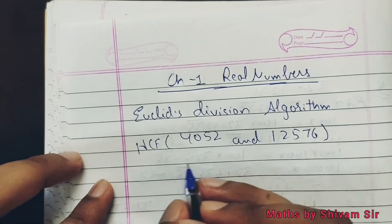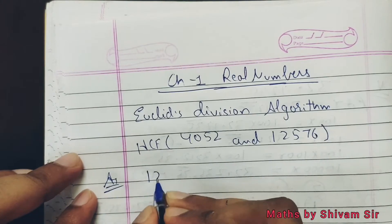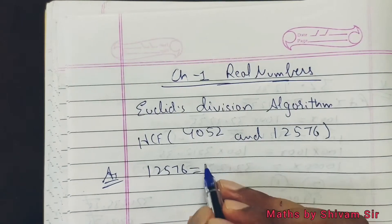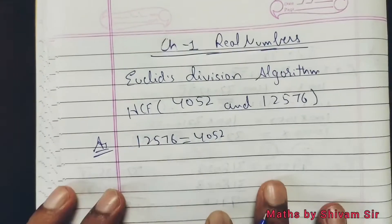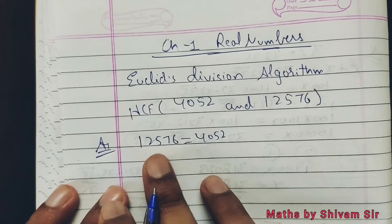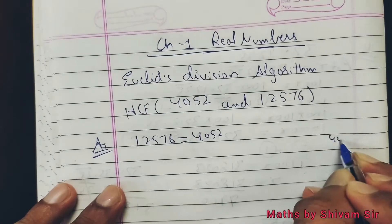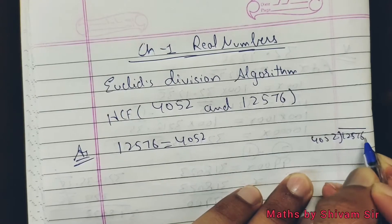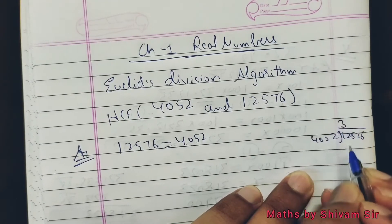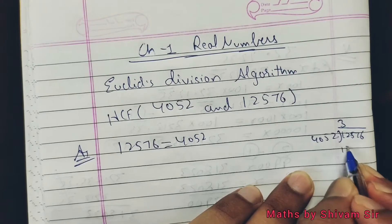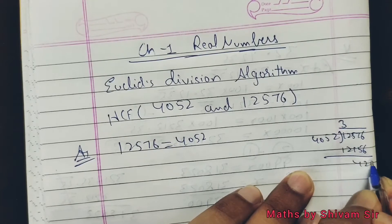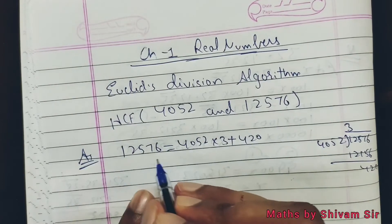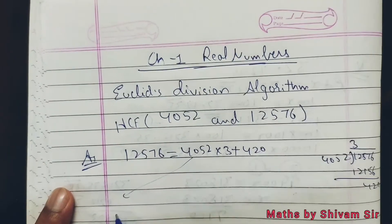Jo bhi number bada ho dono mein se, use pehle likho. 12576 bada hai, to use likhenge. Is equal to lagaenge, phir chhote wale number ko 4052 likhenge. Ab 4052 ko kisse multiply karenge — rough mein divide karke dekh lo: 12576 divide by 4052. Jab hum isko teen times multiply karte hain to 4052 times 3 plus 420 banata hai.